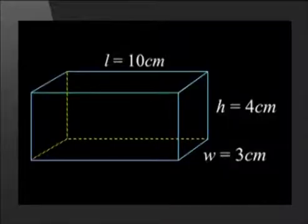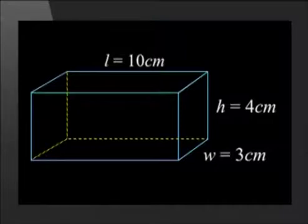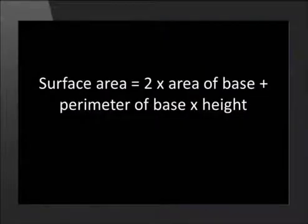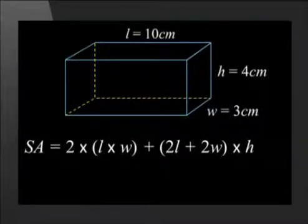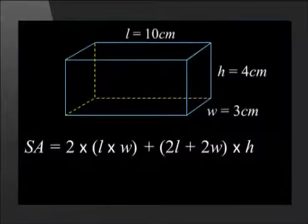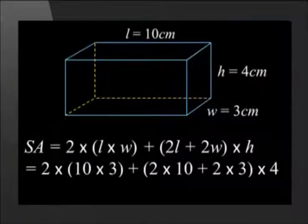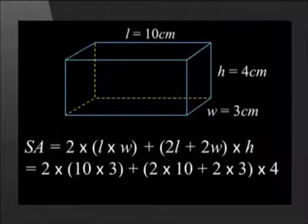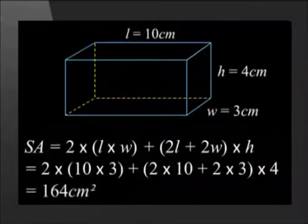Then we'll compare the two answers. The rectangular prism has a width of 3 cm, a height of 4 cm, and a length of 10 cm. Remember that the surface area equals 2 times the area of the base plus the perimeter of the base times the height of the prism, which is 2 times length times width plus 2 times the length plus 2 times the width, times the height. Substituting the given values, we get 2 times 10 times 3, plus the sum of 2 times 10 plus 2 times 3, times 4, which is equal to 164 cm².